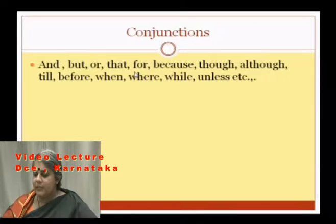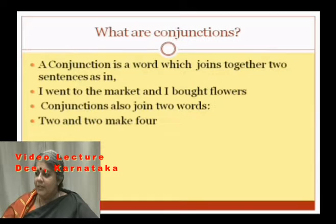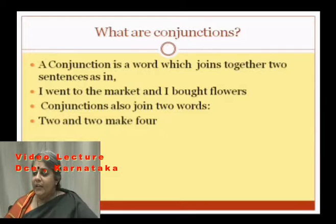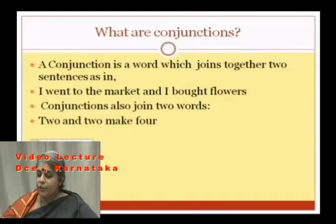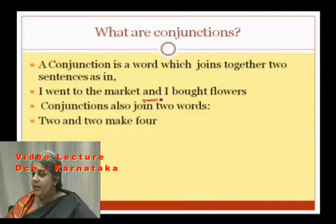The meaning of the word conjunction: a conjunction is a word which joins together two sentences. Here, 'I went to the market' is one sentence, and 'I bought flowers' is another sentence. These are two sentences joined together by the conjunction.